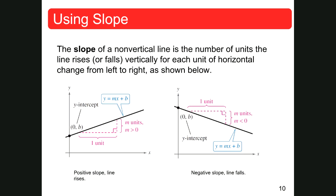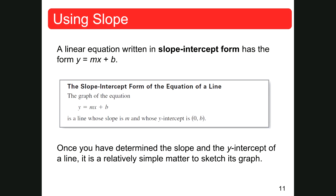The slope of a non-vertical line is the number of units the line rises or falls vertically for each unit of horizontal change left and right. That's why when I did 1/2, I went up 1 over 2, up 1 over 2 — it's how far up do I go to how far over do I go. If it was negative, I would go down. Negative slope goes down. A linear equation in slope-intercept form has y equals mx plus b, where b is the y-intercept and m is the slope.